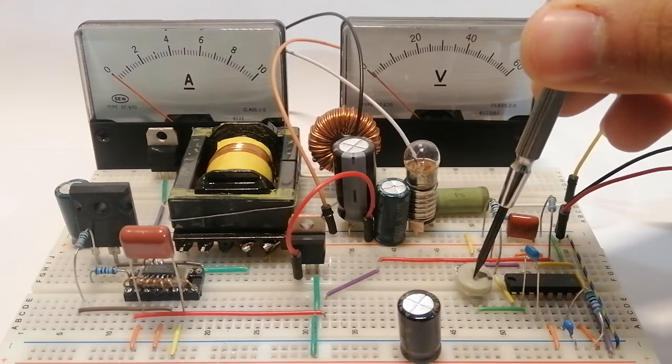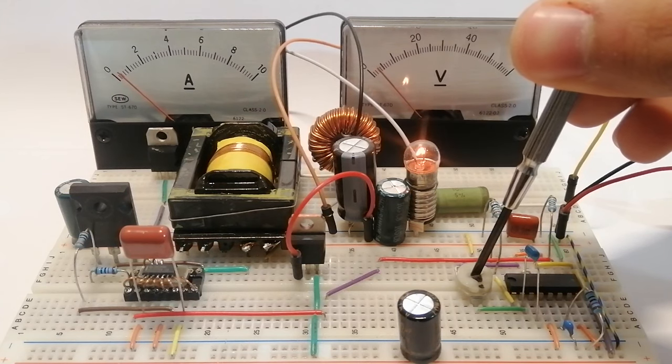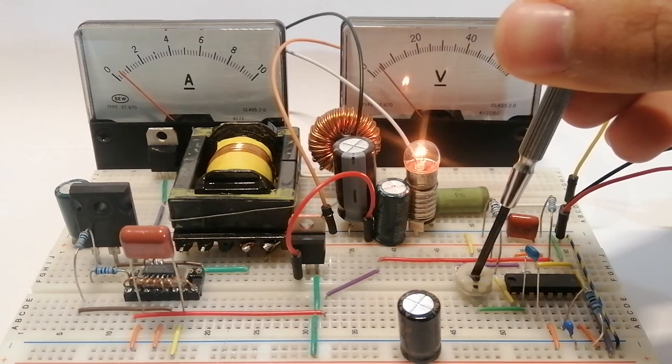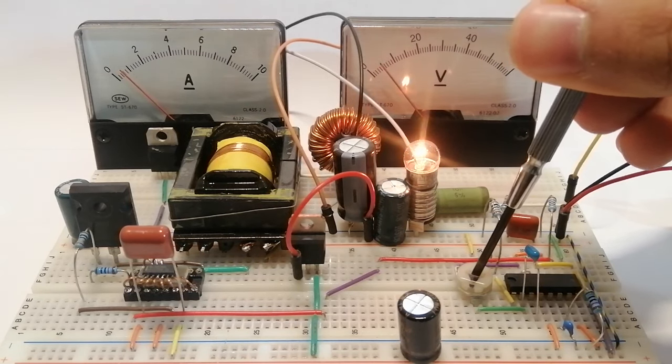Here's the circuit built on a breadboard and after giving it power I can slowly ramp up the voltage on the reference pin. And we can see that we have a voltage on the output. We also see that there's current flowing and in fact I put these two analog meters to monitor voltage and current on the output.